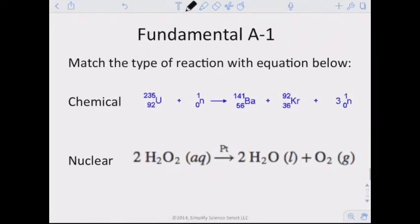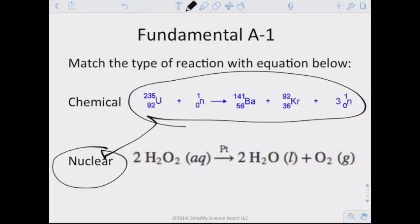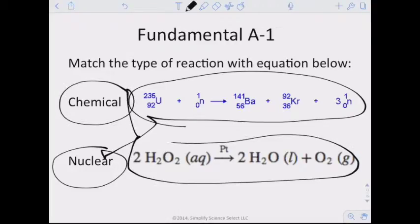It's a little fundamental question. It says match the type of reaction with the equation below. We're looking at a chemical reaction and a nuclear reaction. A nuclear reaction involves the nucleus, so that would match up there. A chemical reaction, we're not changing the atoms at all, not changing their identity, so that would be a chemical reaction. We see that we have uranium and then we have a neutron here, and that changes into different elements. So essentially, you don't have the same elements on each side on a nuclear. On a chemical, you do.